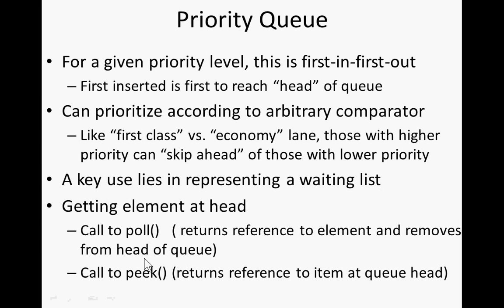So you can call poll to get the people one by one off the queue. The beauty of it is that it maintains all these in the right order. All you have to specify is, given two people, which one is higher priority — that's all you have to specify. And it takes care of keeping them in the right order, advancing them as you poll. So as you remove them from this queue, they're just lined up and you keep on working through them.